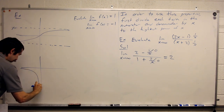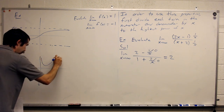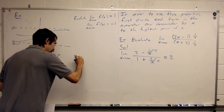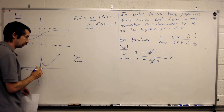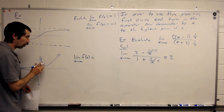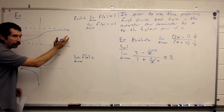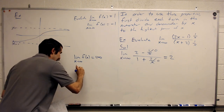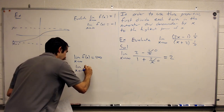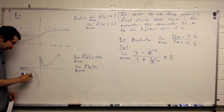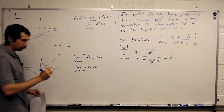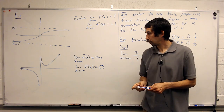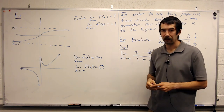Maybe our graph looks like this. In this case, the limit as x goes to infinity: the function never levels out — it keeps growing and growing, so it goes to infinity. And the limit as x goes to negative infinity: as x gets further and further to the left, it approaches zero. So just by looking at the graph, it's pretty easy to determine the values of these limits at infinity or negative infinity.